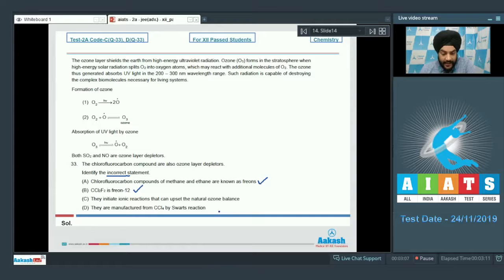Option C: They initiate ionic reactions that can upset the natural ozone balance. This is not correct. These chlorofluorocarbons initiate radical reactions, not ionic reactions. The reactions happening are radical in nature, involving radicals. So the C statement is not correct.